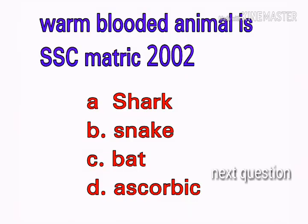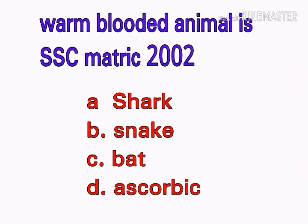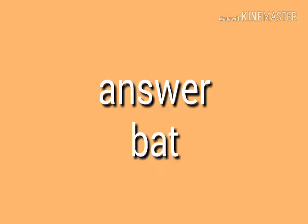Which of the following is a warm-blooded animal? Options: a) shark, b) snake, c) bat, d) ascorbate. Your answer is bat.